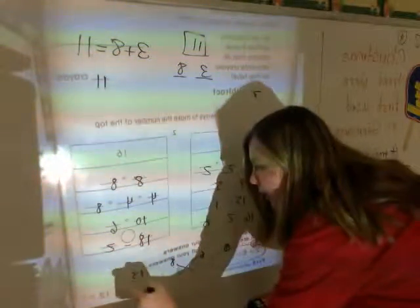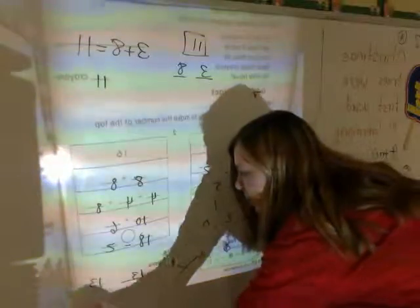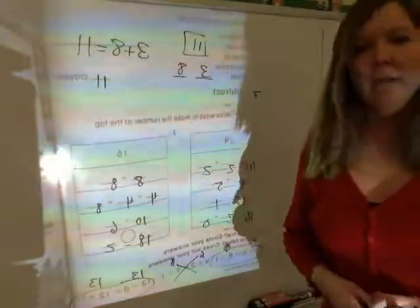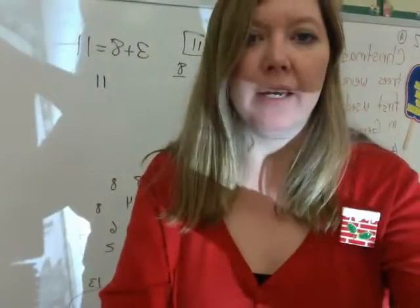3 minus 0 is 13. 12 plus 1 is 13. This is equal. So, I'm going to circle that. The secret word is red. Red.